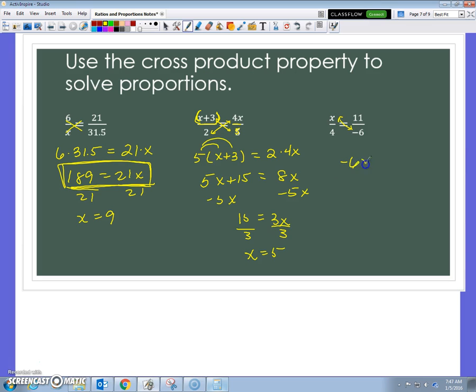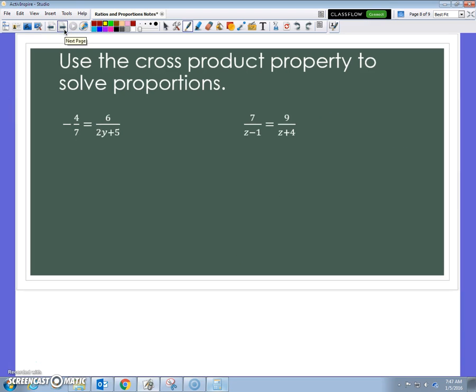Same way here. The extremes will give me negative 6x. The means give me 44. If I divide by negative 6, it looks like a fraction. It is a ratio. However you want to think of it. I can reduce 22 over 3. So, x equals negative 22 over 3. You don't have to change it to a mixed number. Negative 22 over 3 is just fine.